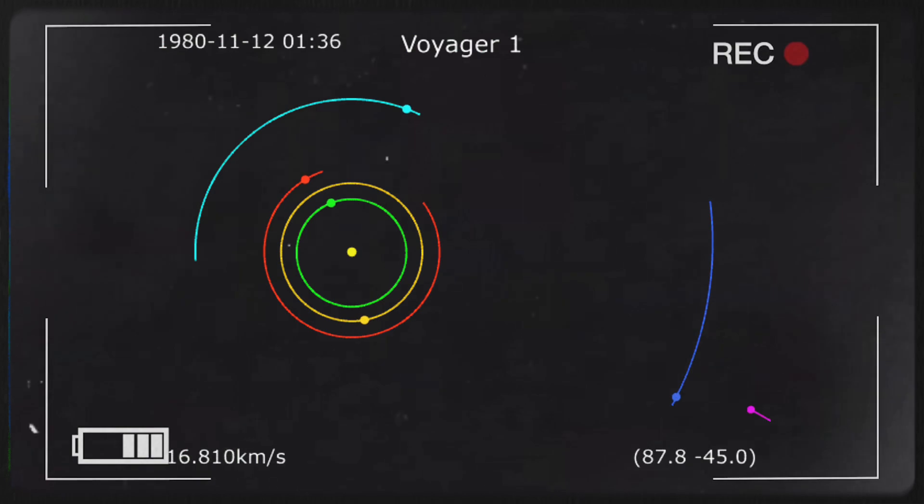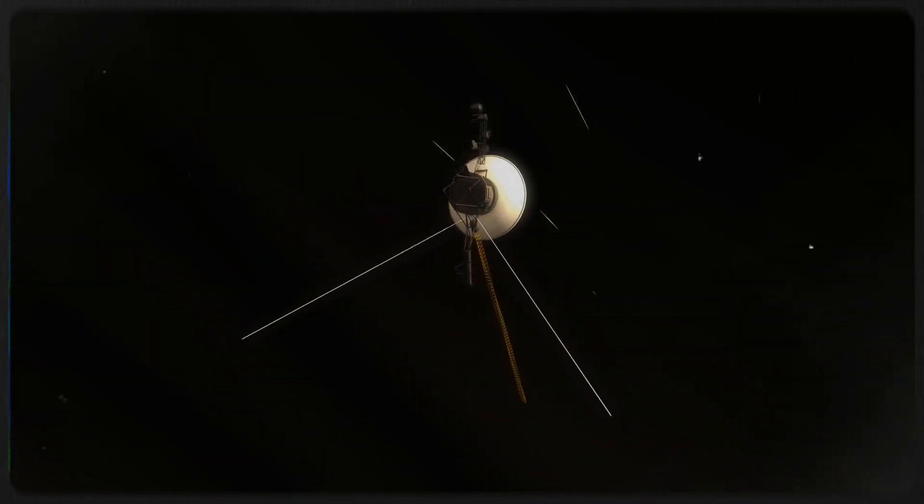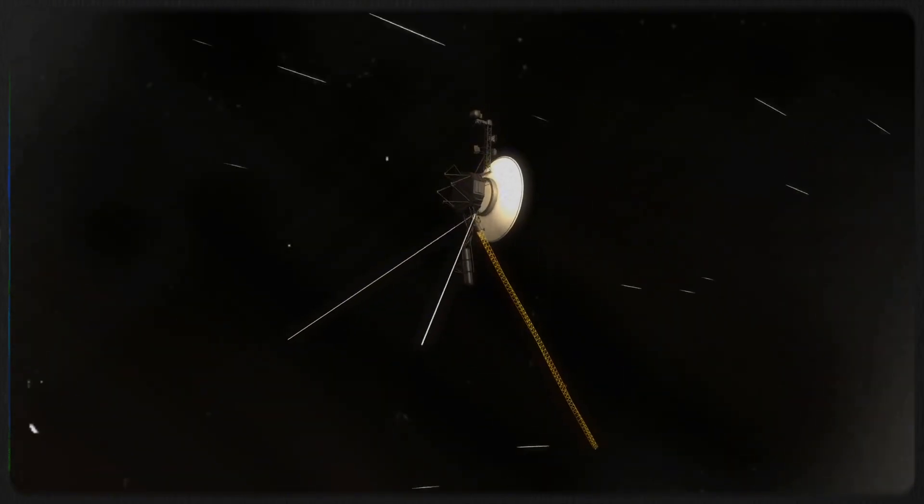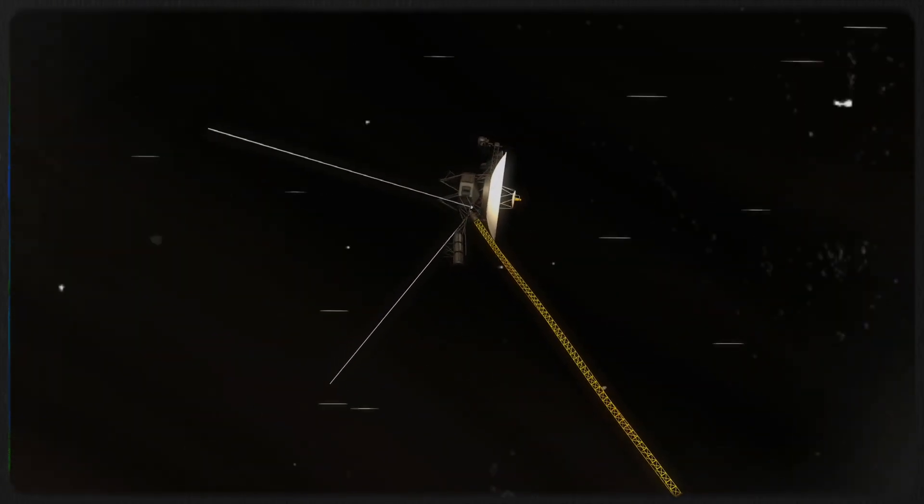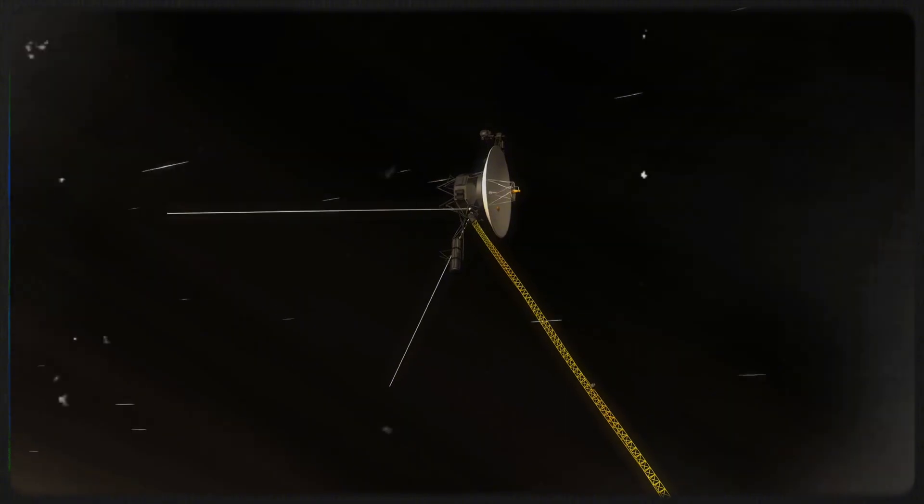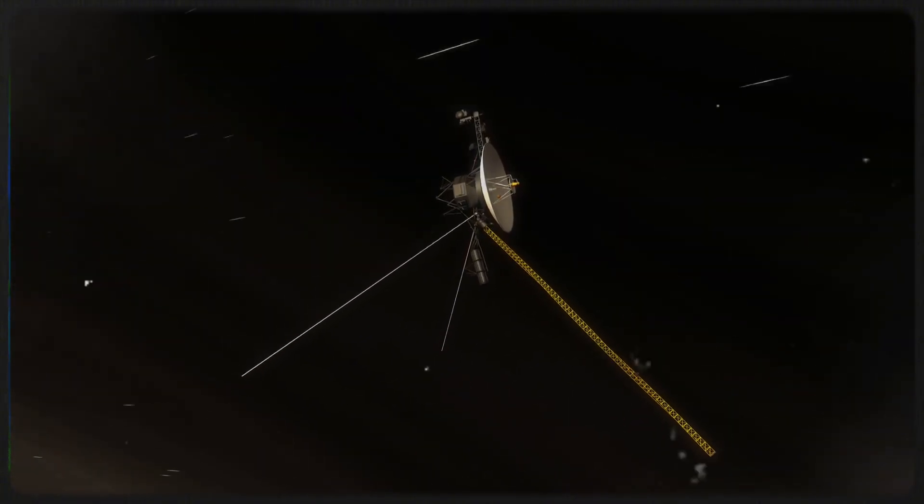While the data collected by Voyager 1 was undeniably groundbreaking and offered unprecedented insights, it came with a significant drawback. The information was incomplete. This limitation stemmed from a malfunctioning instrument designed to measure plasma temperature, which had been defective since the 1980s. As a result, scientists were particularly eager to see what additional information Voyager 2 would provide as it made its approach to the heliopause, especially since its plasma measurement instruments were still operational.